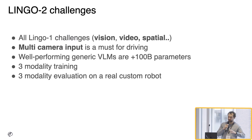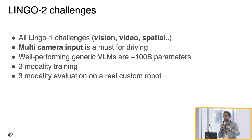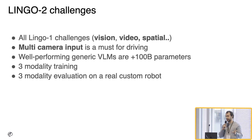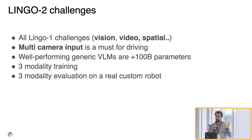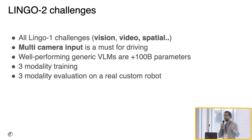The challenges of that system are that we inherit all the first system's challenges — being vision and video, processing spatial information. But now we can't just use single camera video input. To drive, we need to take in at least three cameras, or even seven sometimes. And well-performing generic VLMs like GPT-4V would probably be more than 100 billion parameters, but we want to run it on a car in real time while it generates decisions.